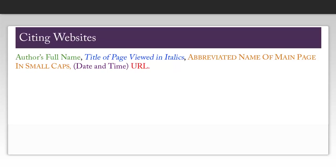In order to cite a website using the Blue Book, you need to look for the author's name, if available, the title of the page — which you can usually find by looking at the title bar at the top of your browser, and you'll put this in italics — the main page title, which you will put in small caps, and you'll capitalize as it is on the page. You do need to use Table T13 to abbreviate this title.